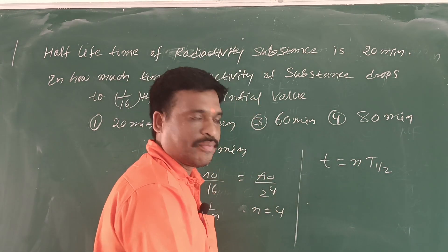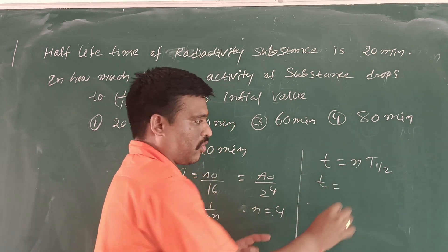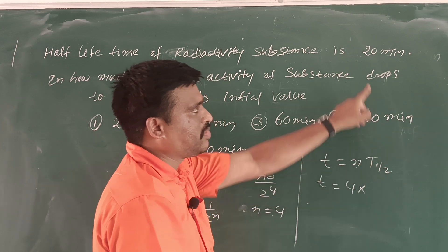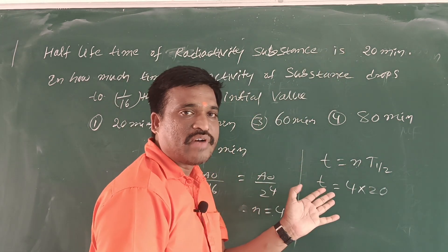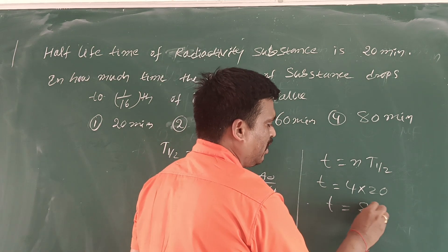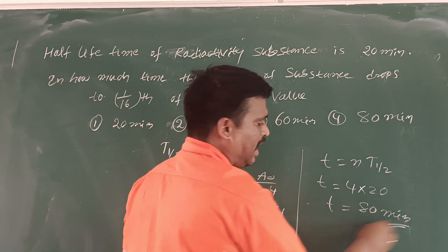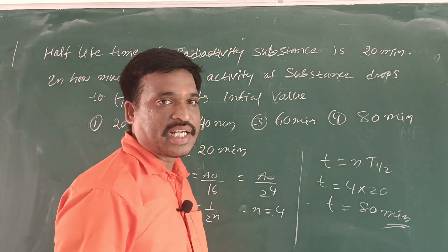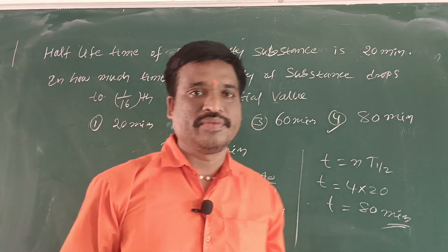Half-life time. Now, t is equal to n, which is 4, into half-life time, which is 20 minutes. 20 into 4 is 80. So t is equal to 80 minutes. That is the right answer. The fourth option is the right answer for this question.